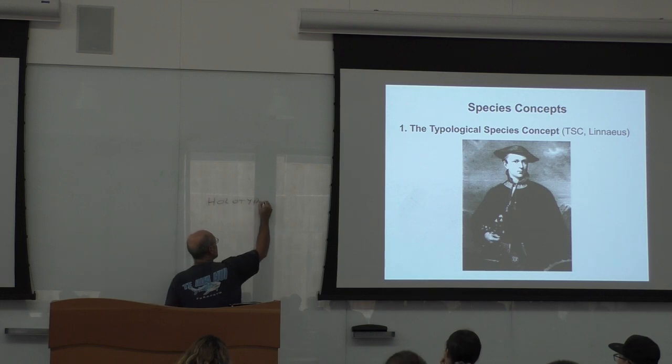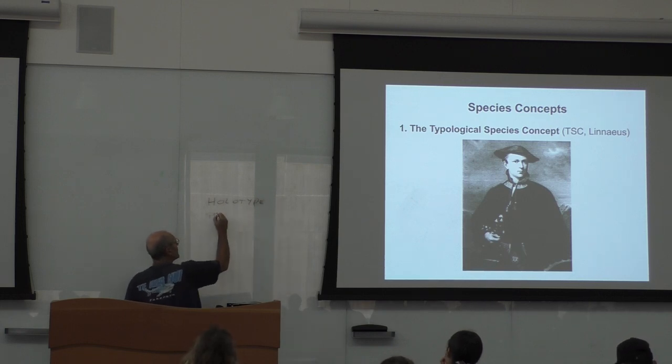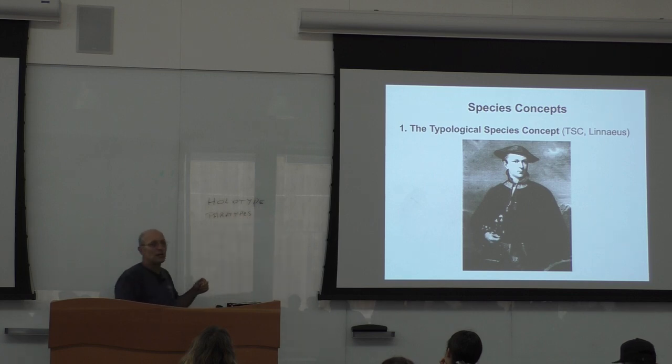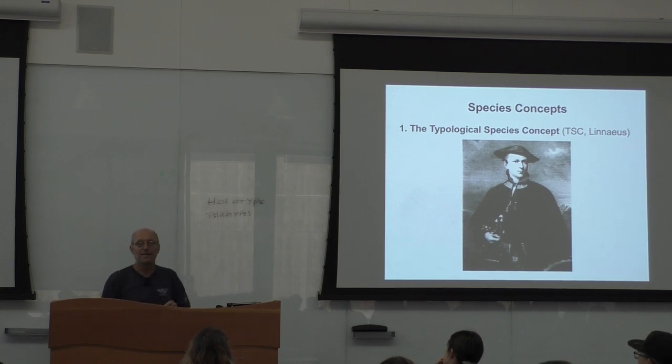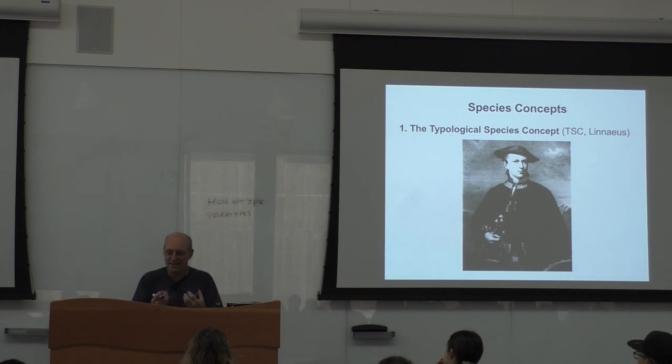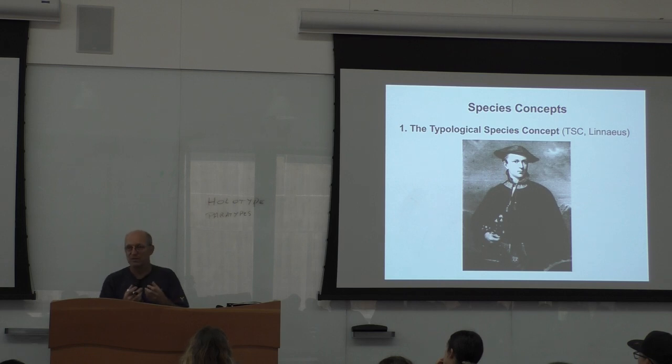Holotype. That's the type specimen. And then the paratypes are the other ones. So in general, you have in a jar, you have the holotype by itself. And then you have, if you collect 15 individuals, then 14 individuals would be in another jar. And then this is the jar of the paratypes. If you go to the California Academy of Sciences, they can show you the collections. And then there will always be a row that is all the holotypes. You can just see all the one, the type that represents just the species. So the idea is really to have the best representative.